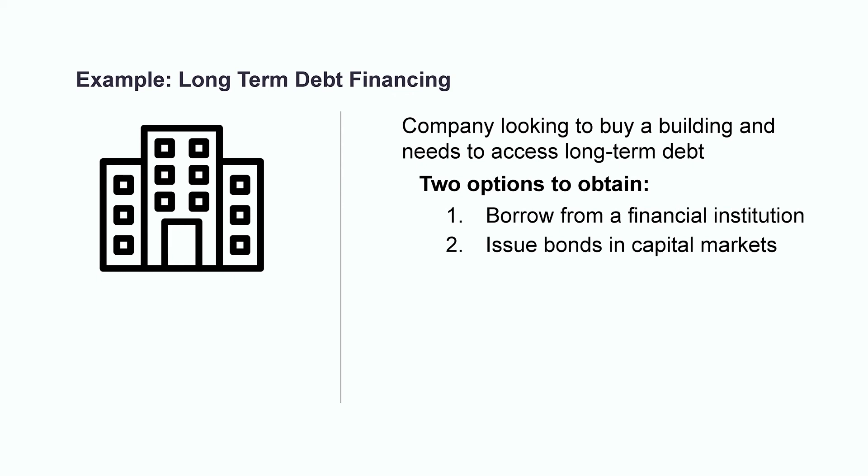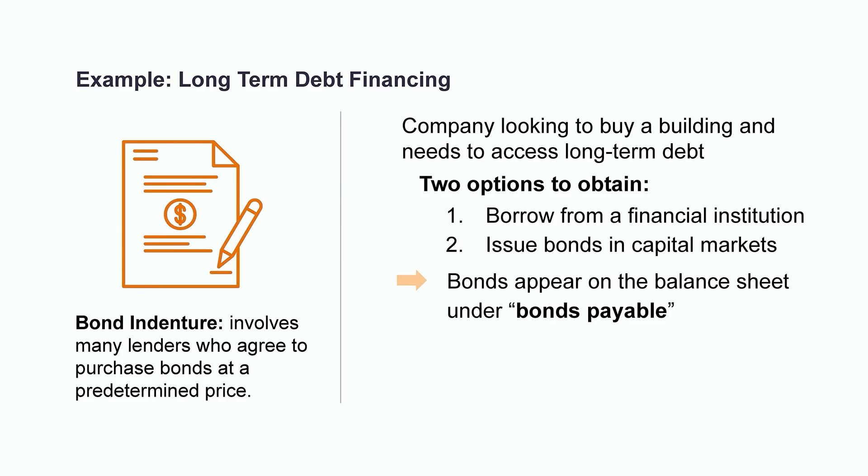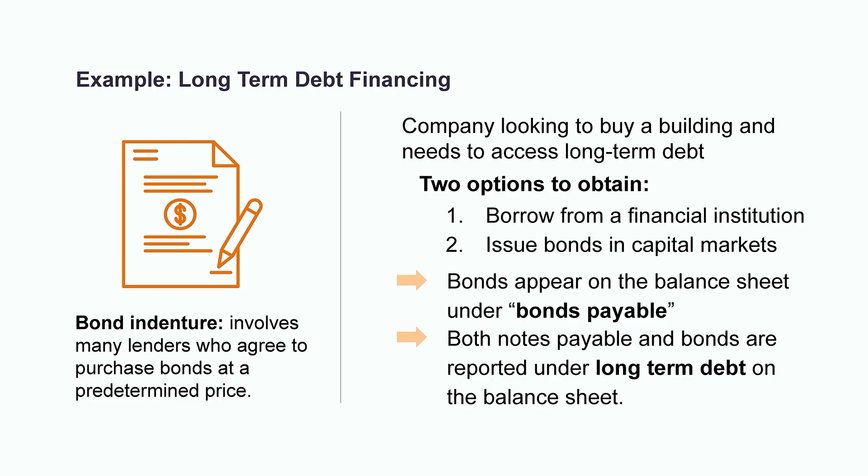A bond is a financial contract, which is similar to the agreement we just discussed with the bank. However, in this case, instead of signing a note payable, the financial contract is referred to as a bond indenture and involves many lenders instead of just that single institution. These lenders can include individual investors and companies that have agreed to purchase the bonds from the company for an agreed-upon price with the intention of earning interest while they hold it. Ultimately, they'll sell the bond back at a date in the future and recover their initial investment. Since the funds that the company receives need to be paid back in the future, bonds appear on the balance sheet under the title of bonds payable. Whether the company decides to take on a note payable from a bank or a bond payable from investors, the amount to be paid back in future years must be reported under the category of long-term debt on the balance sheet.